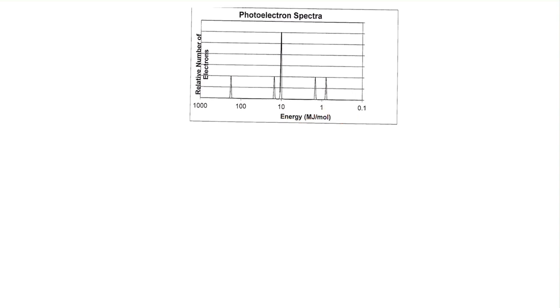On this side, for the y-axis, it's always the relative number of electrons, but they never really give you the number. So how you look for the scale is you look for the peak that is the closest to the highest energy level, which in this case the highest is 1000, so this peak is the very first one.